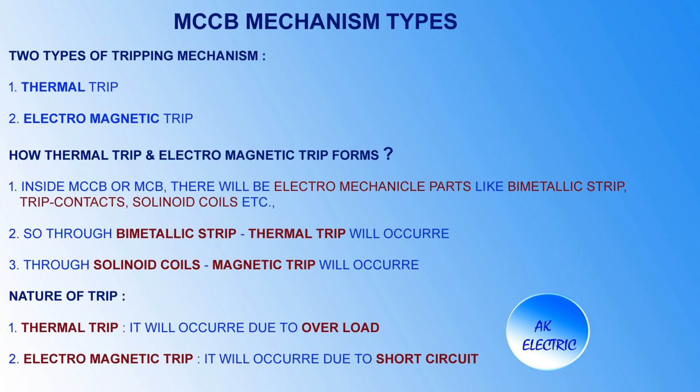MCCB mechanism types: there are two types of tripping mechanism — one is thermal trip and another one is electromagnetic trip. Inside MCCB or MCB there are electromechanical parts like bimetallic strip, trip contacts, and solenoid coils. Through bimetallic strip, thermal trip will occur, and through solenoid coils, magnetic trip will occur.